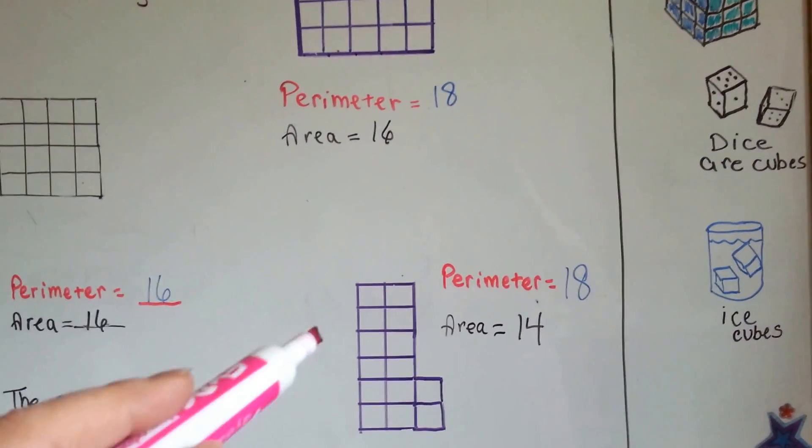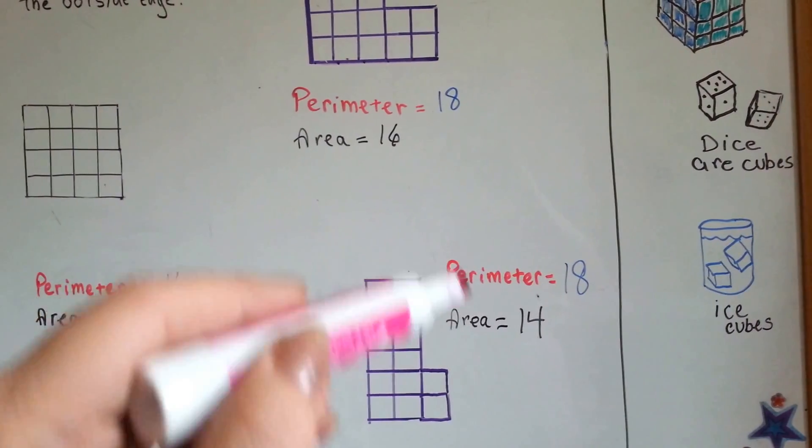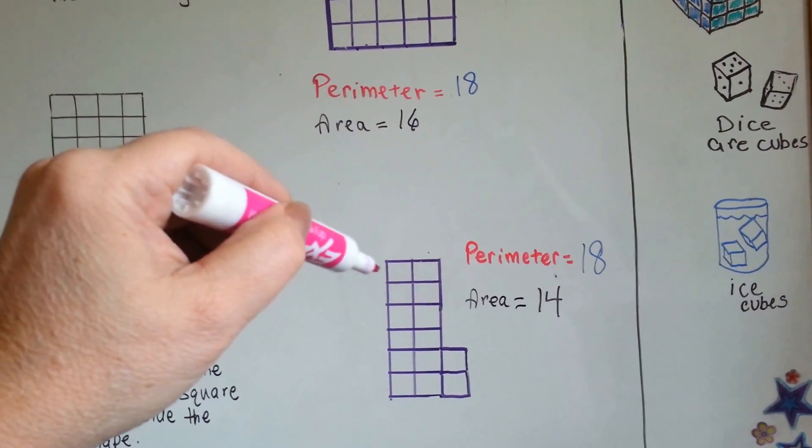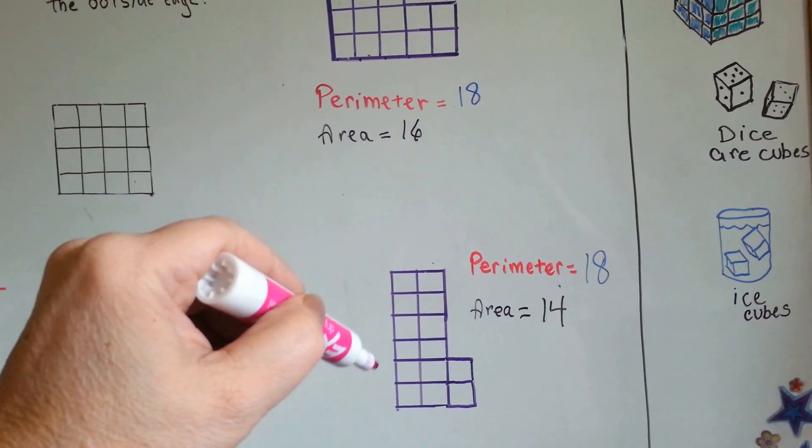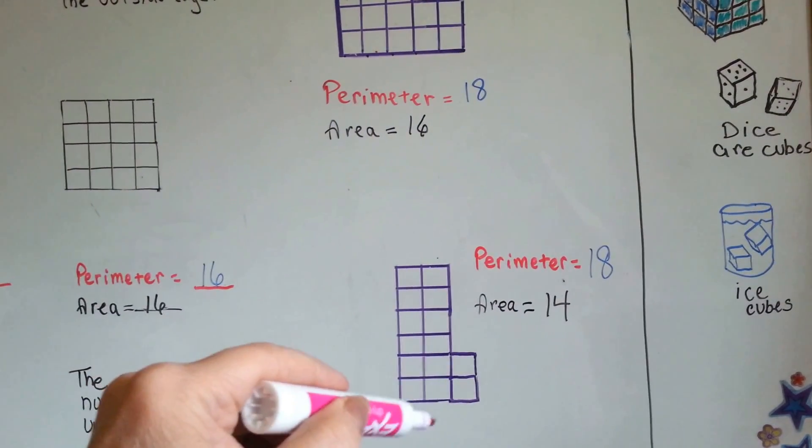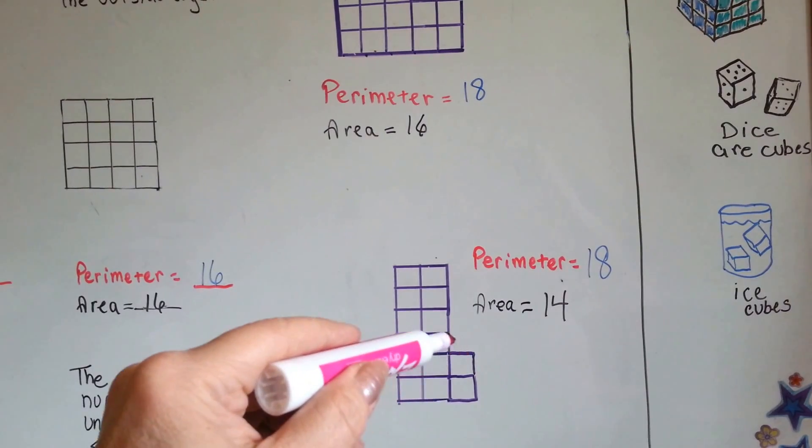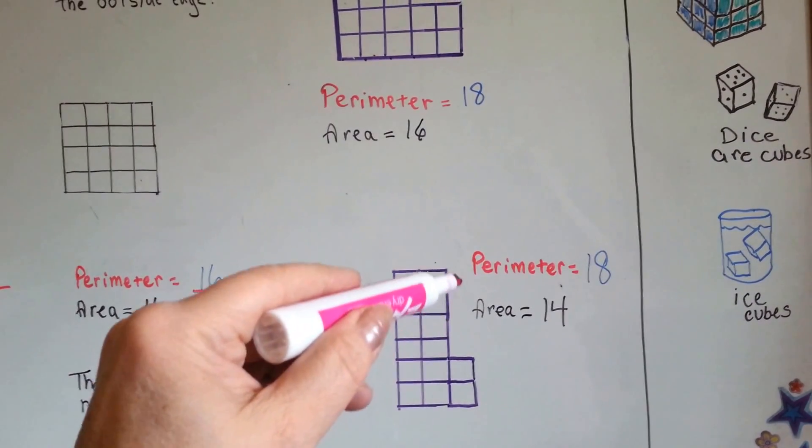And this one has a perimeter of 18, just like this one, but its area is only 14. Let's count them. So start up here, 1, 2, 3, 4, 5, 6, 7, 8, 9, 10, 11, 12, 13, 14, 15, 16, 17, 18.